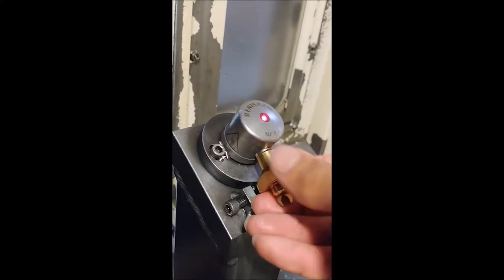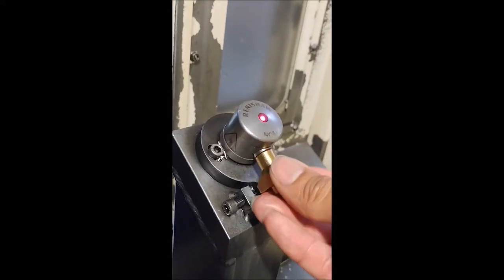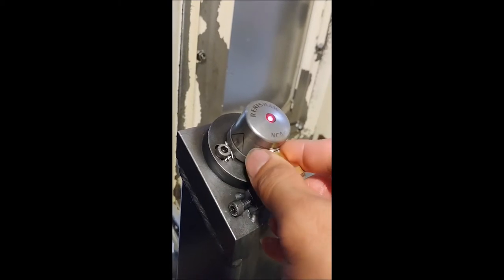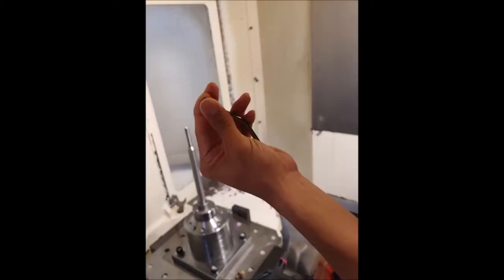Use the supplied Renishaw tool to unscrew the orifice cover on the transmitter unit. Carefully remove it and blow through the orifice from the inside out using an air gun.